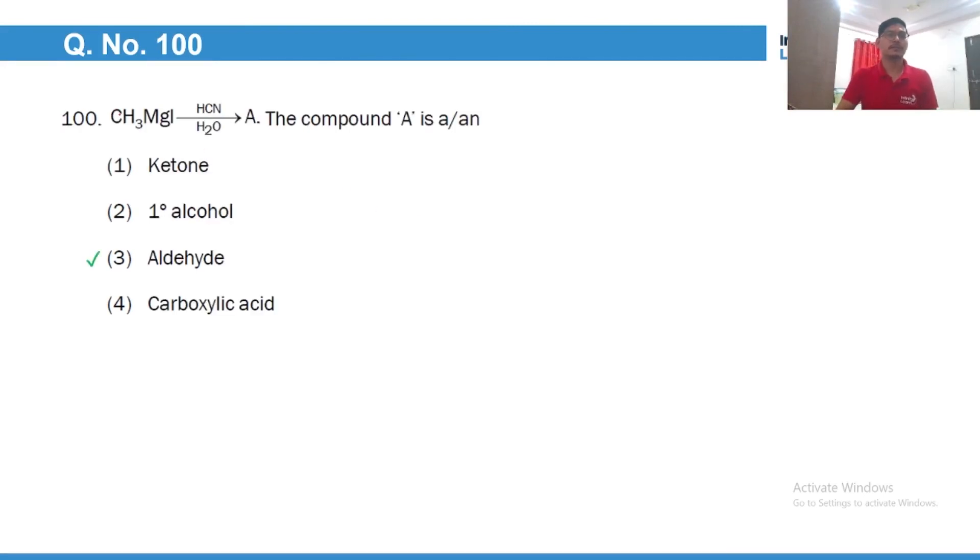This is a nucleophilic attack of the Grignard reagent on the carbon atom of HCN. So this will give you CH3 CH double bond N minus MgI plus, and followed by hydrolysis, this would be replaced by an oxygen atom. So the product would be an aldehyde which is acetaldehyde. Thank you guys.